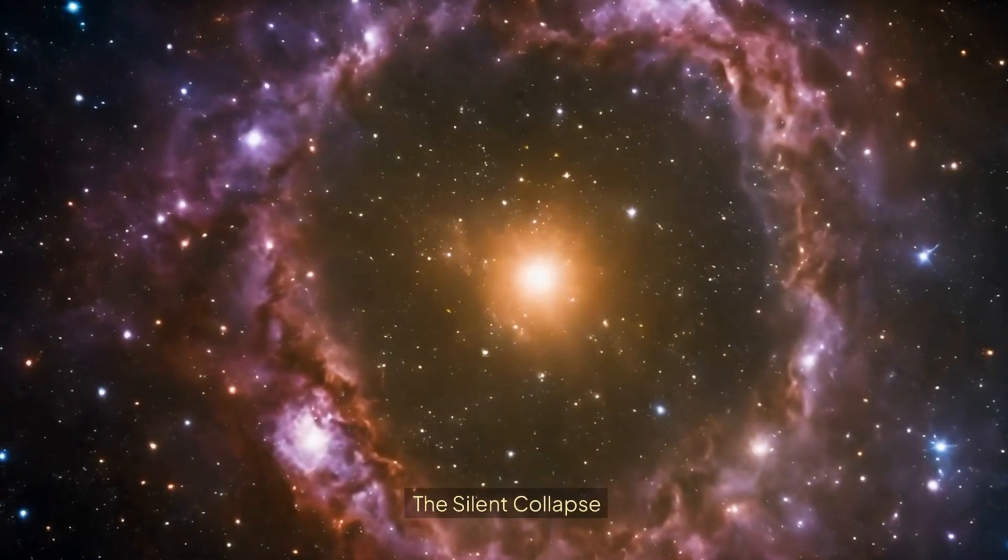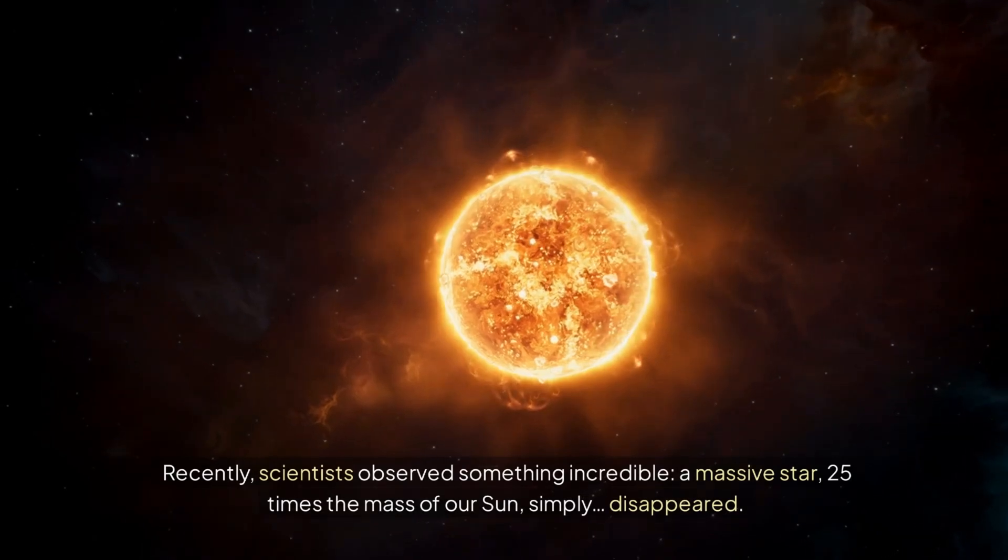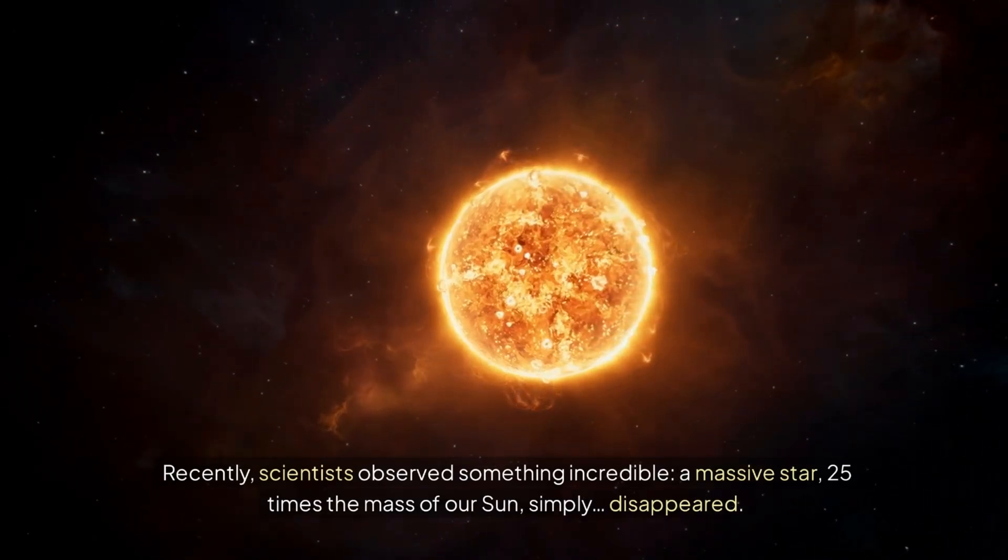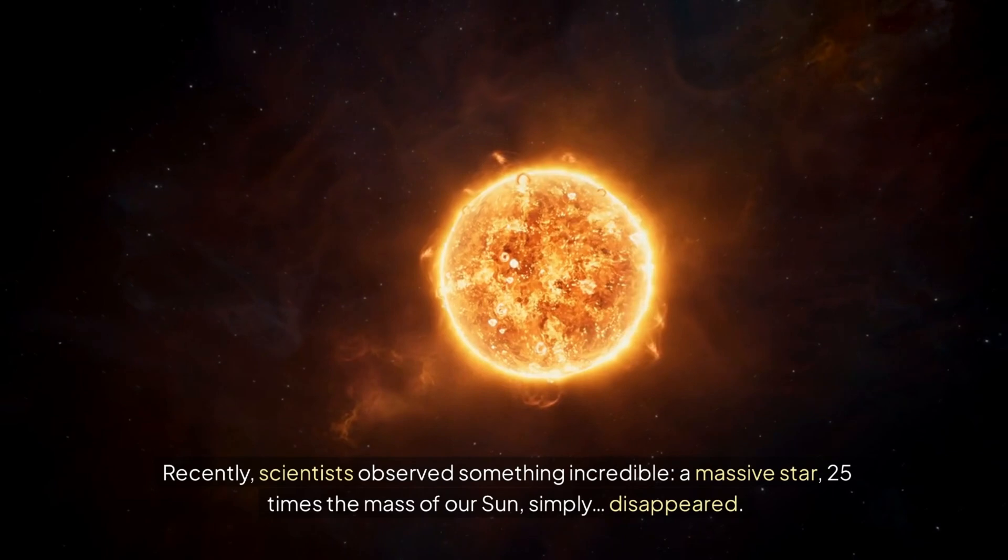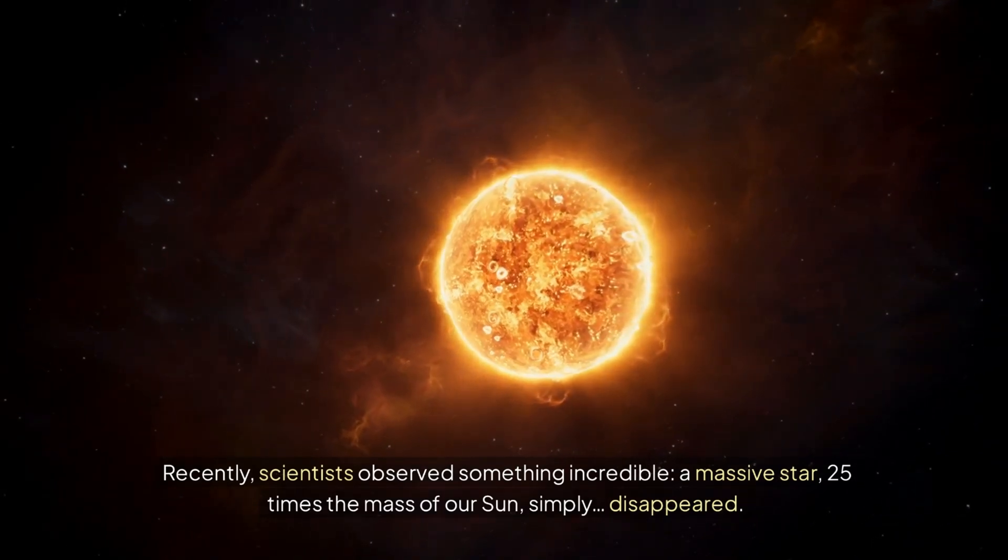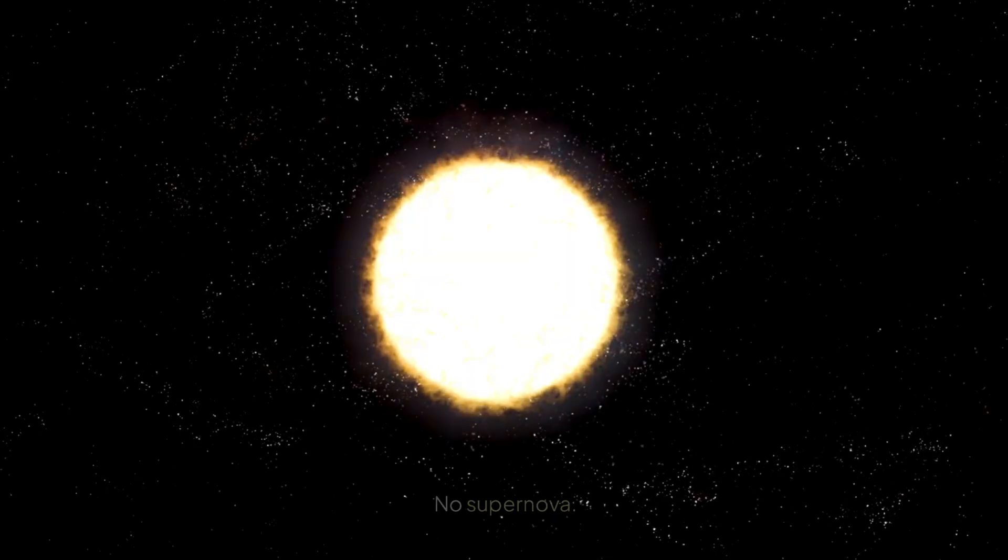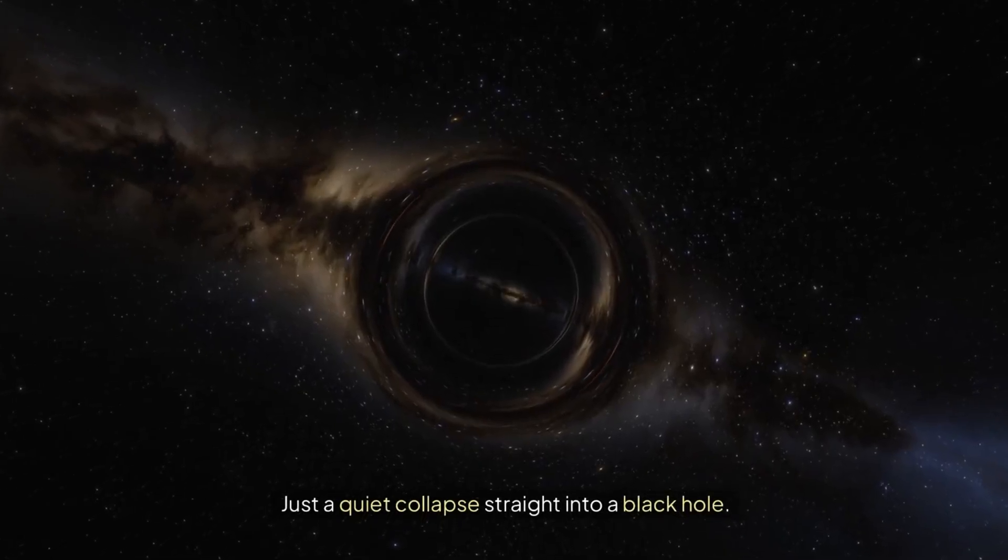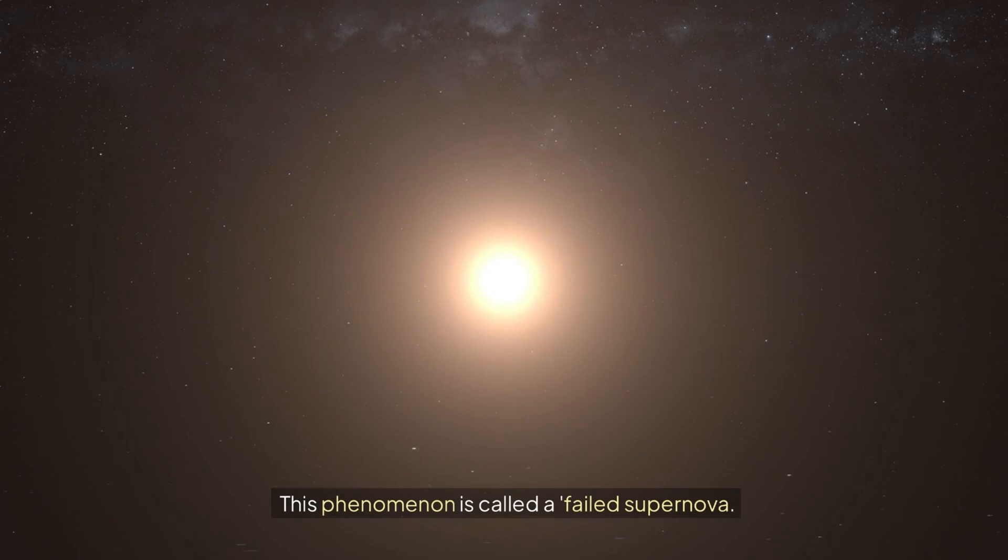Recently, scientists observed something incredible: a massive star, 25 times the mass of our sun, simply disappeared. No explosion, no supernova—just a quiet collapse straight into a black hole. This phenomenon is called a failed supernova. Why didn't this star explode like it was supposed to?